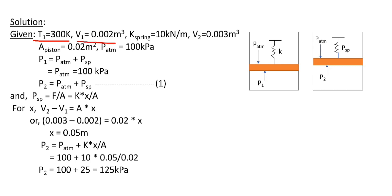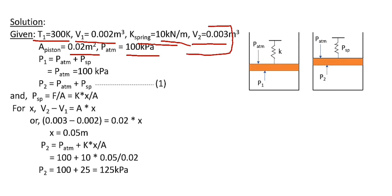Here, P1 is the initial pressure of air and V1 is the initial volume. K is the spring constant, which is 10 kN per meter. V2 is the final volume after the addition of heat and the area of the piston is 0.02 meter square. Atmospheric pressure is 100 kPa — all these values are given in the question.